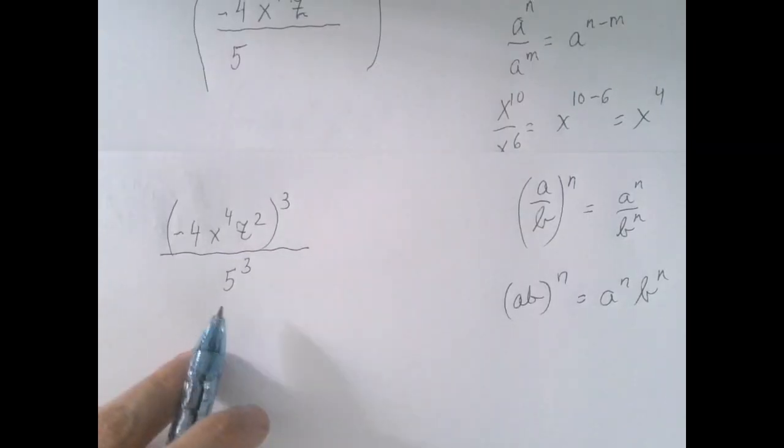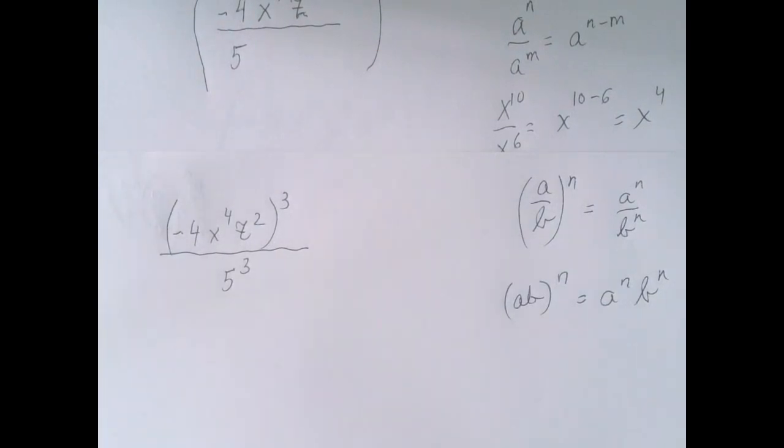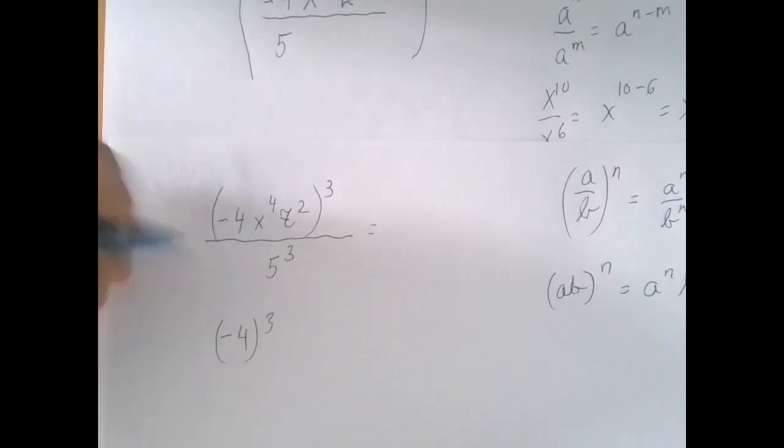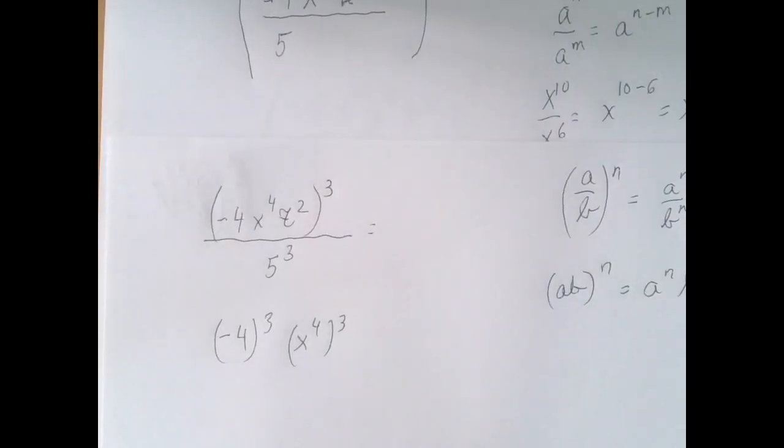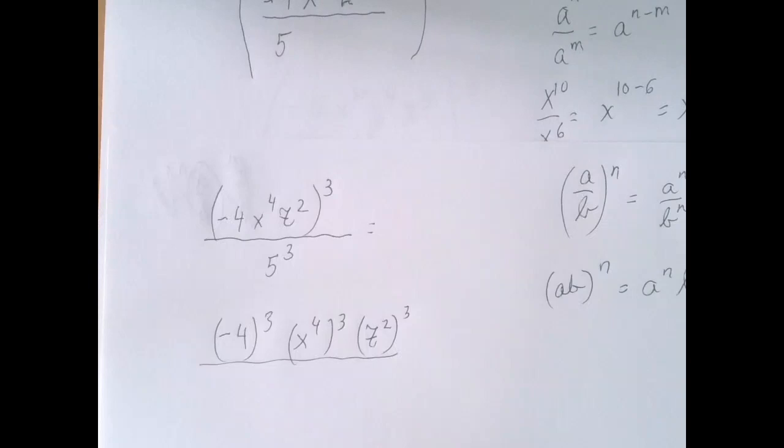Now we're going to further break down this expression using this rule of exponents that says if we're exponentiating a product, we can do it factor by factor. So that means this expression is going to be the same as negative four to the third power, x to the fourth to the third power, z squared to the third power, divided by five to the third power.